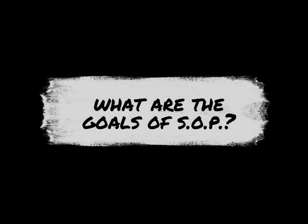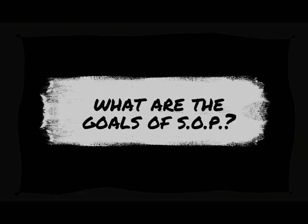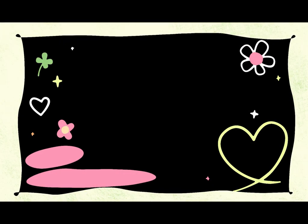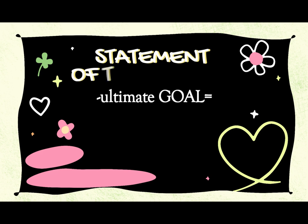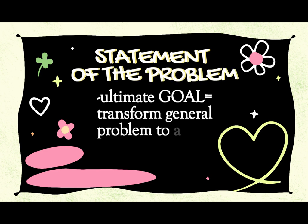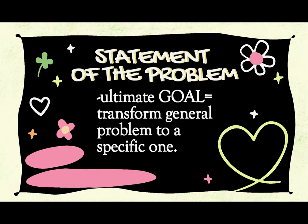What are the goals of a Statement of the Problem? The ultimate goal of an SOP is to transform a generalized problem — which may refer to something that bothers you, a perceived lack, or something missing as you observed — into a targeted, well-defined problem, one that can be resolved through focused research and careful decision-making. In short, SOP aims to turn a generalized problem into a specific one.